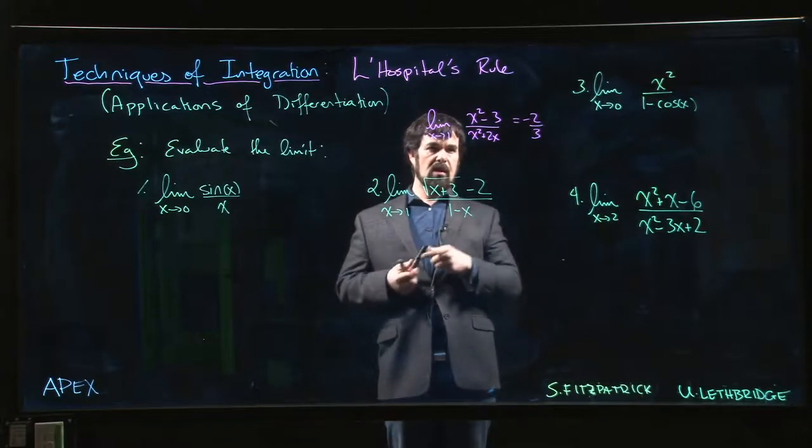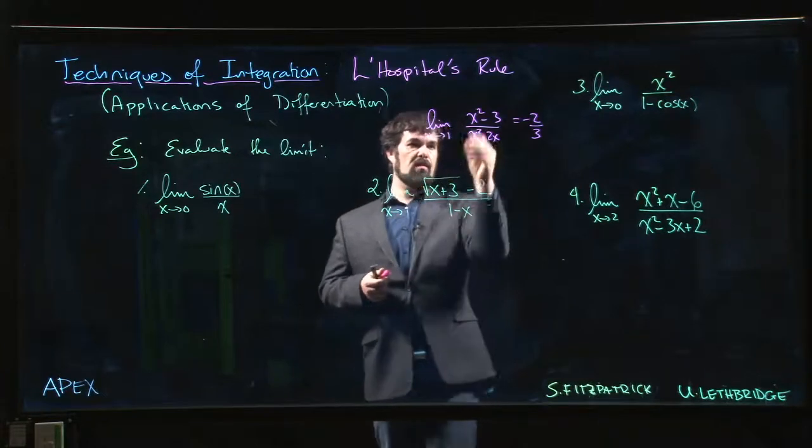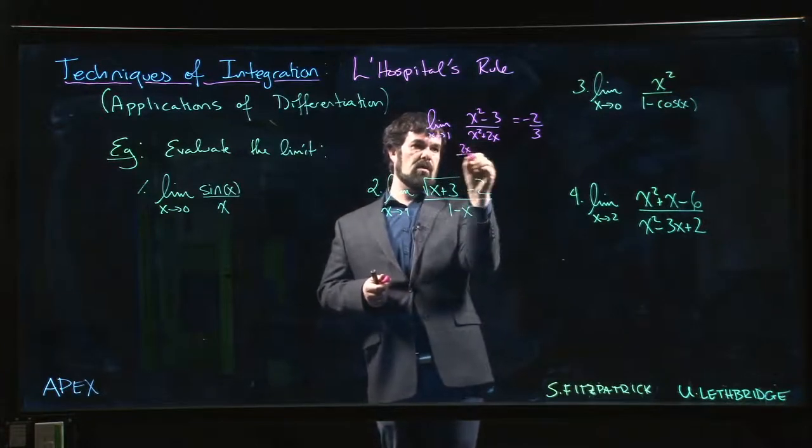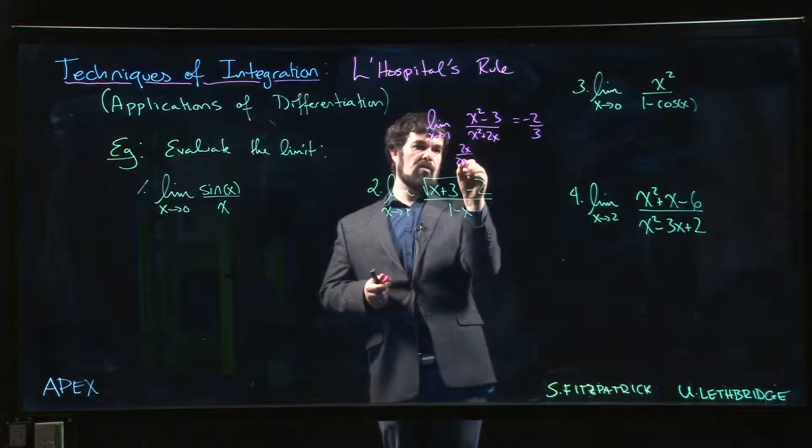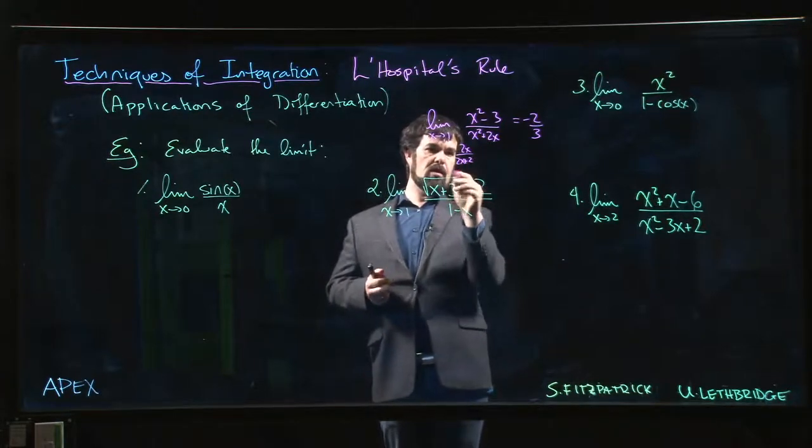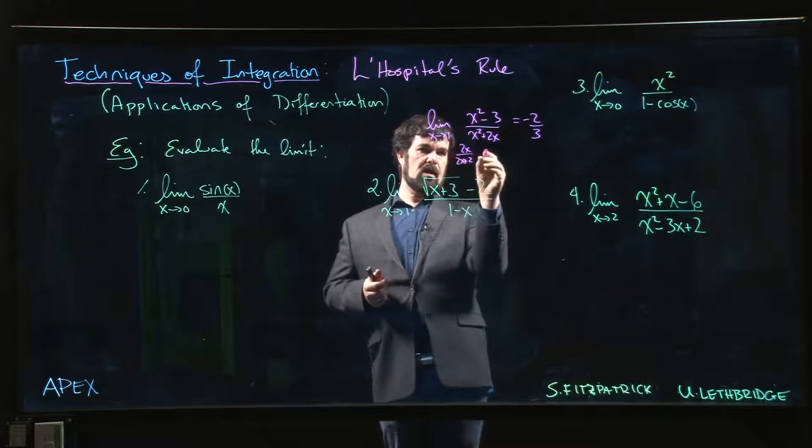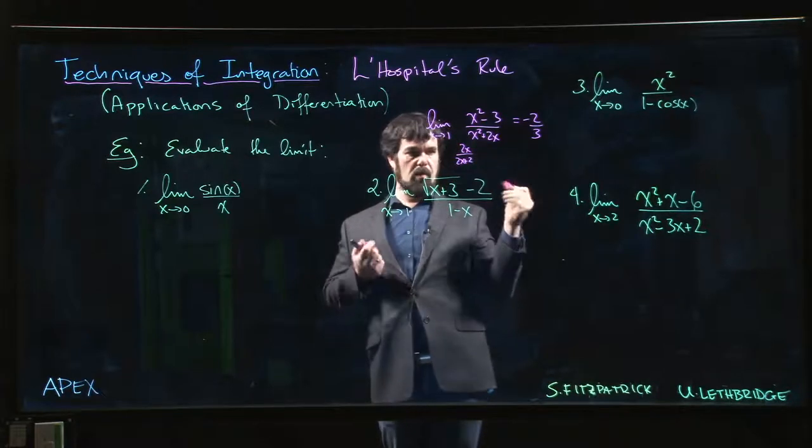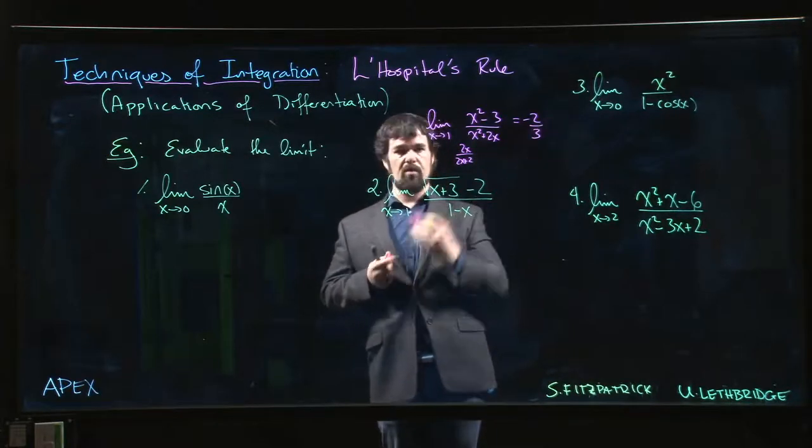But if you did use L'Hopital's rule, you would get the wrong answer, right? Because the derivative of the top is 2x, the derivative of the bottom is 2x plus 2. And if you use L'Hopital's rule here and you plug in the number, you're going to get 2 over 4, you get 1 half. The answer is not a half, it's minus 2 over 3.